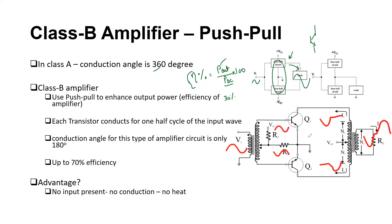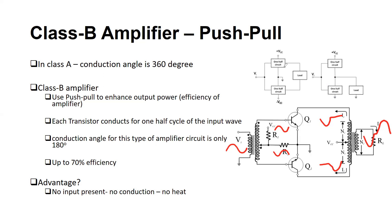An important advantage of the class B amplifier is that when no input signal is present, both the upper and lower transistors don't conduct current. Unlike class A where the transistor is always on, in class B no input means no current delivered to the load and the transistors remain switched off. Therefore, there is no significant heat dissipated and you don't require a heat sink, whereas in class A the single transistor is always on, conducting heavy current and requiring a large heat sink.